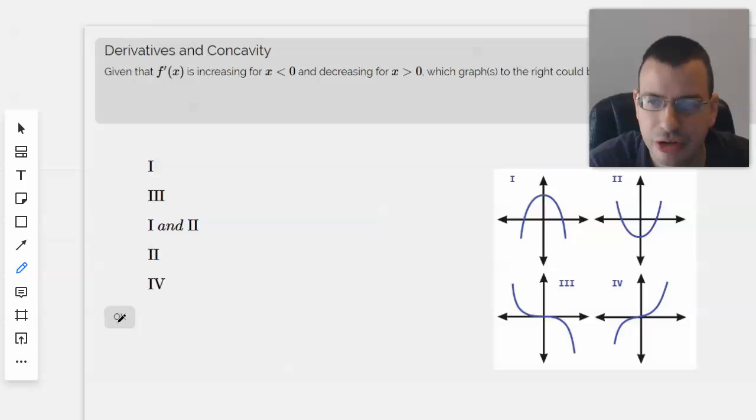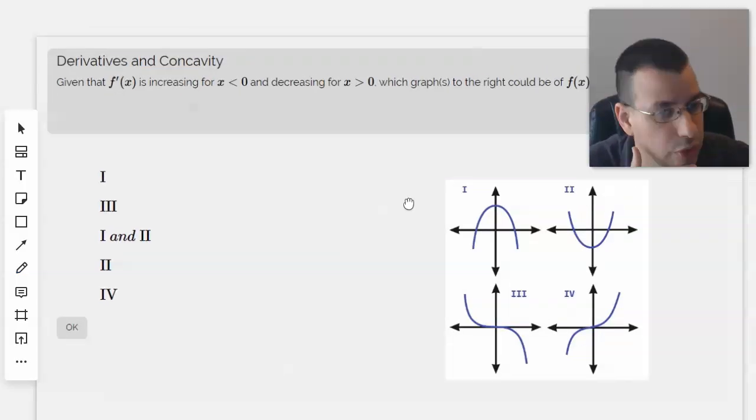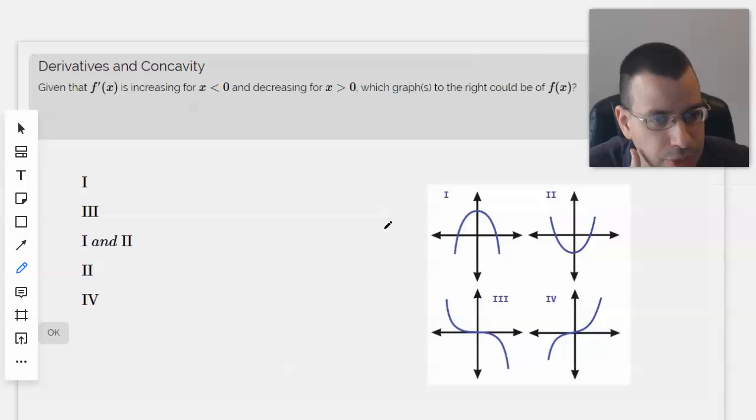Given that f prime of x is increasing for x less than 0 and decreasing for x greater than 0, which graph or graphs to the right could be of f of x?